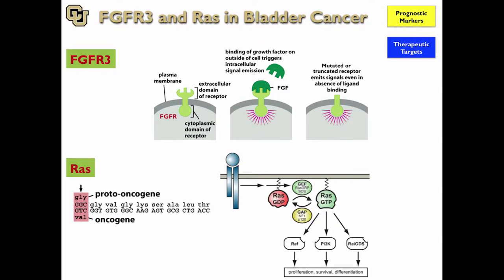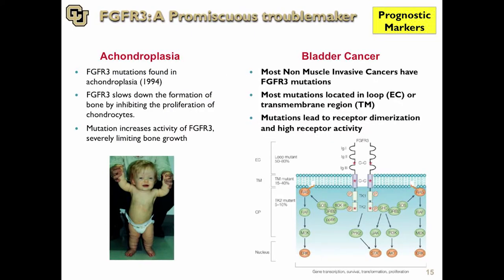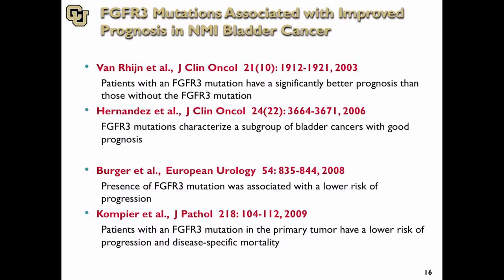FGFR3 is a membrane receptor, and RAS is another very important gene — an intracellular molecule that signals to three different important molecules: PI3-kinase, RAF, and RAL. RAS is a majorly mutated gene in many cancers. FGFR3 mutations were originally identified in achondroplasia — when mutated, the receptor is constitutively active, causes fusion of the bone plates, resulting in that phenotype. In cancer, it causes growth of the cancer cell. Many papers have shown that FGFR3 mutations are associated with better prognosis in non-muscle invasive disease.